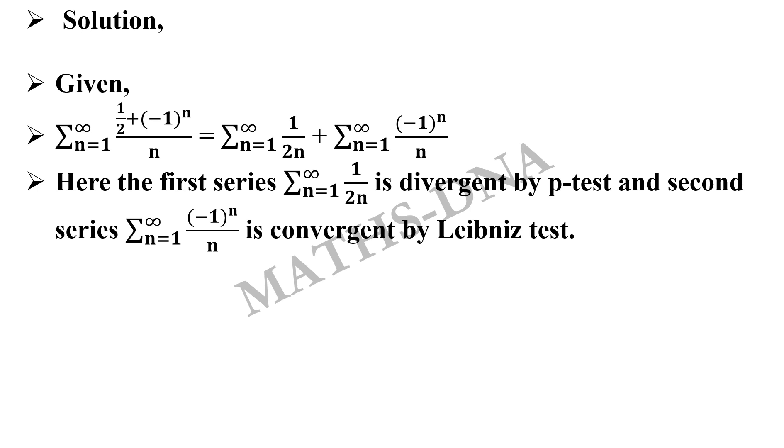Clearly the first series, summation n from 1 to infinity 1/(2n), is divergent by p-test. I would highly recommend you to go through p-test. And also the second series, summation n from 1 to infinity (-1)^n/n, is convergent by Leibniz test.